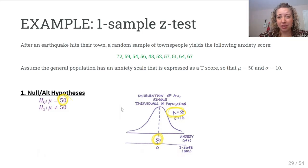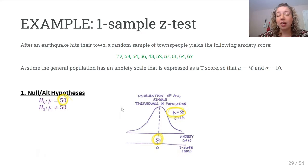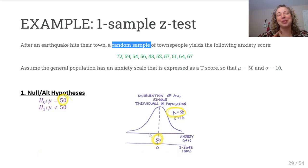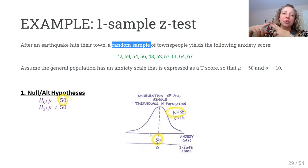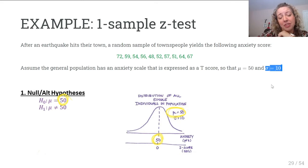You should never have X-bar in your null or alternative hypothesis. The hypotheses are always about the population you're investigating — here, the population of townspeople, not the general public. Regarding assumptions: we have to assume the sample was random, and we're told it is. We also have to assume the standard deviation of anxiety scores in the town is the same as the general population — an assumption we can't test but must be upfront about.